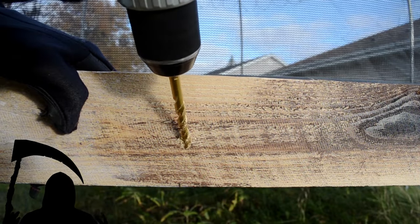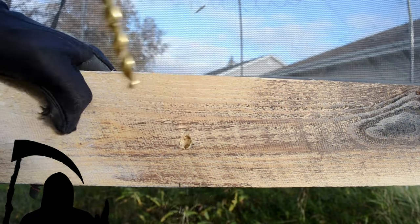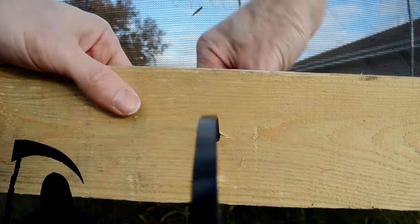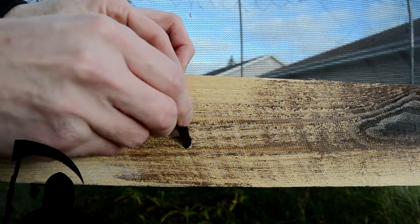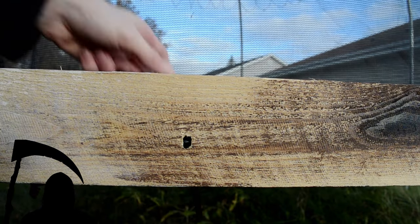Drill one hole from the top at a downward angle, then another using the same hole, but this time at an upward angle. Insert the zip tie through the back, allowing you to easily secure wood with zip ties while keeping them invisible to the viewer.